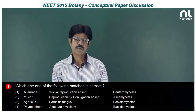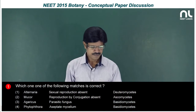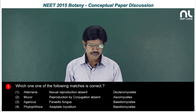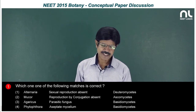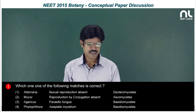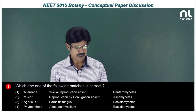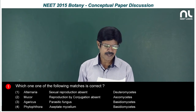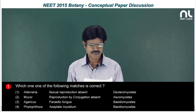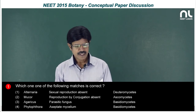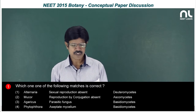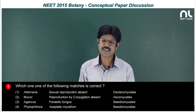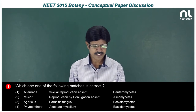Question number 1: which one of the following matches is correct? The first option — Alternaria, sexual reproduction absent. Yes, sexual reproduction is absent in Alternaria and it belongs to Deuteromycetes. That is correct.